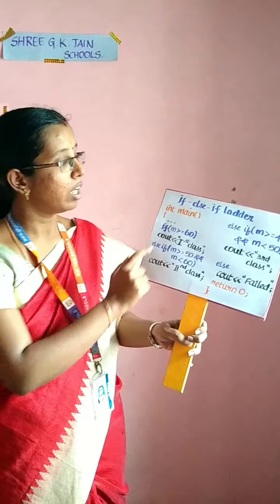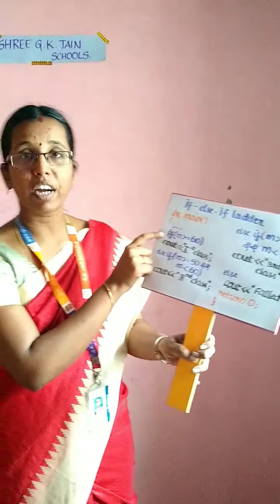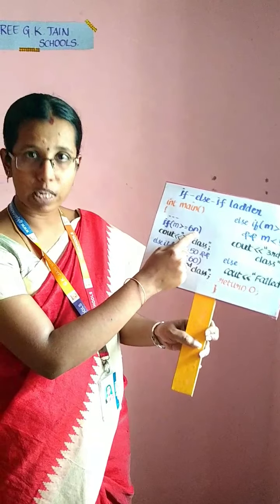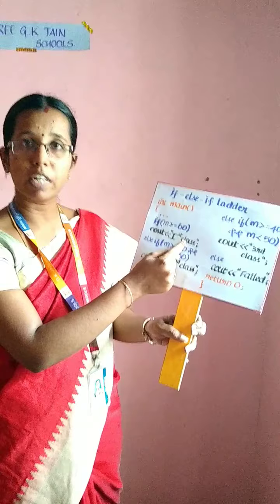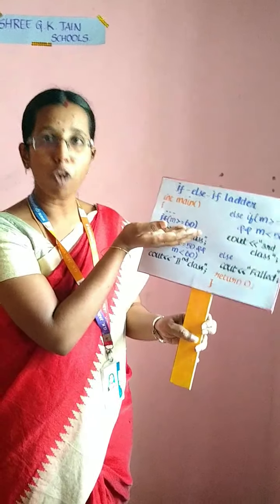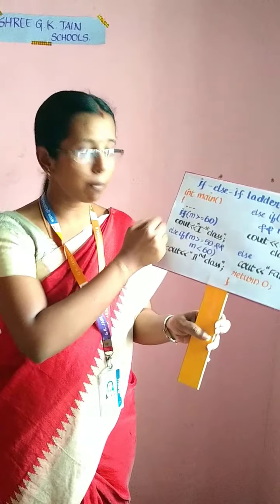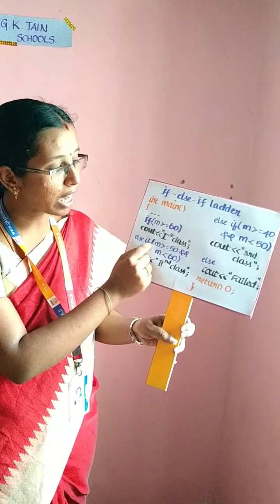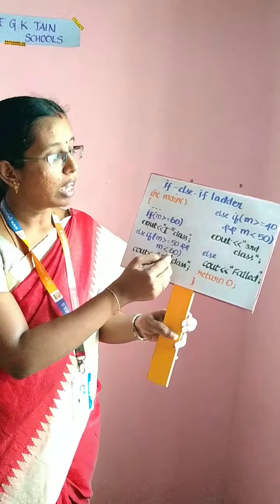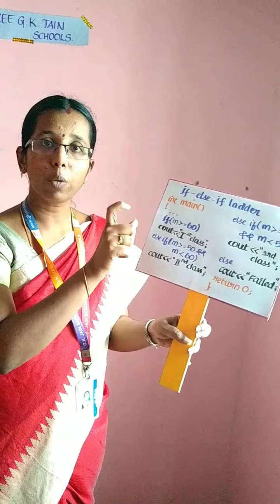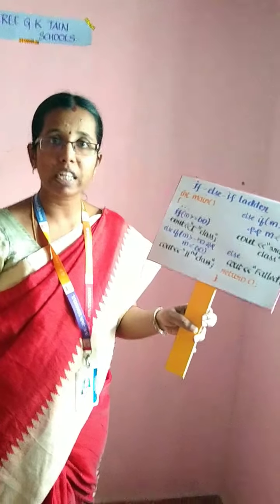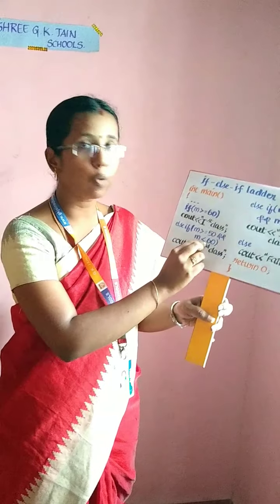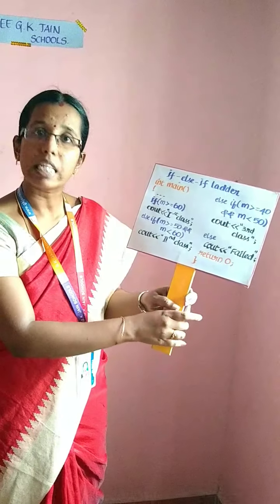Here is an example. Inside your main function, the if-condition is M, which indicates the marks. If M is greater than or equal to 60, then your output will be first class. If it is false, then your control will jump to the else-if statement. In the else-if statement, it checks the condition: if mark is greater than or equal to 50 and less than 60, so your mark will be 50 to 59. If the mark entered by the user lies between this range, then the output will be second class.